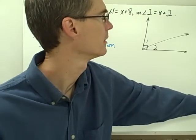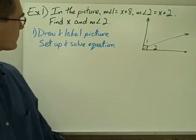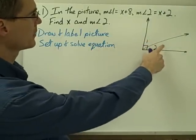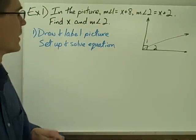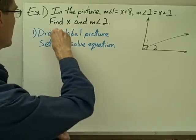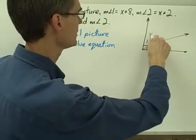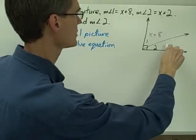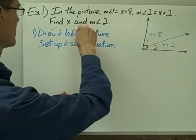Let's look at some example problems involving complementary angles. Example number 1: in this picture, the measure of angle 1 equals x plus 8, and the measure of angle 2 equals x plus 2. Find x and the measure of angle 2. Step 1 is to draw and label the picture. The picture is already drawn, so I label it: measure of angle 1 is x plus 8, and measure of angle 2 is x plus 2.